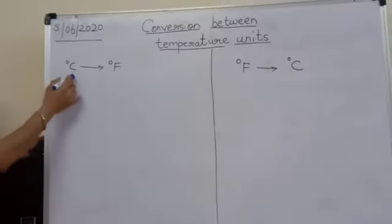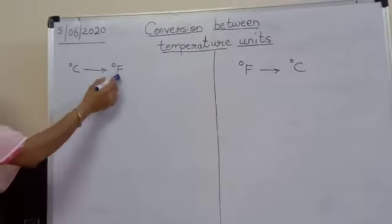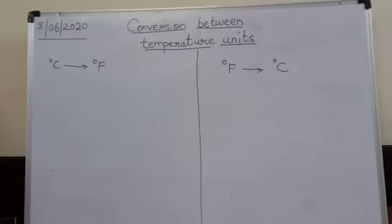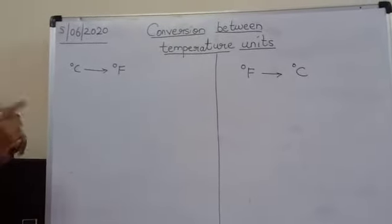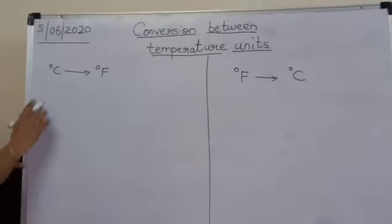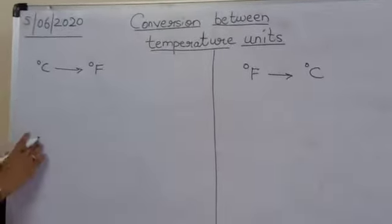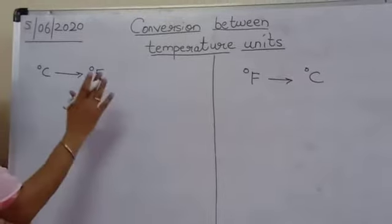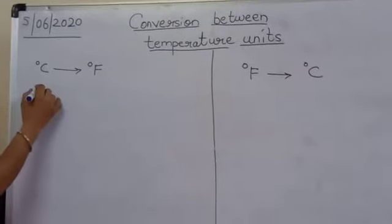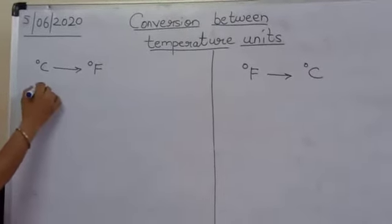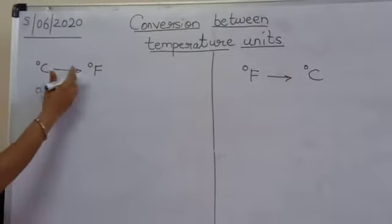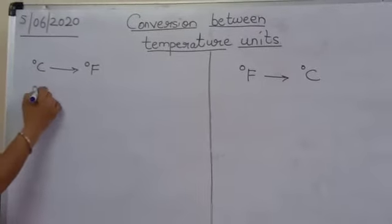First, let us see how to change degree Celsius to degree Fahrenheit. For this, we have to use one formula. Students, please note down the formula in your copy. Now, to change degree Celsius to degree Fahrenheit, you will be using this formula.